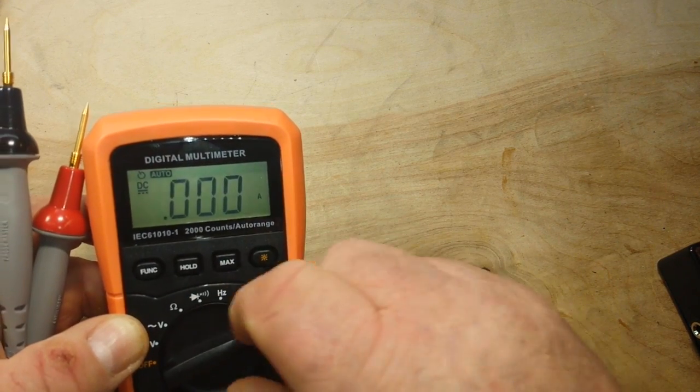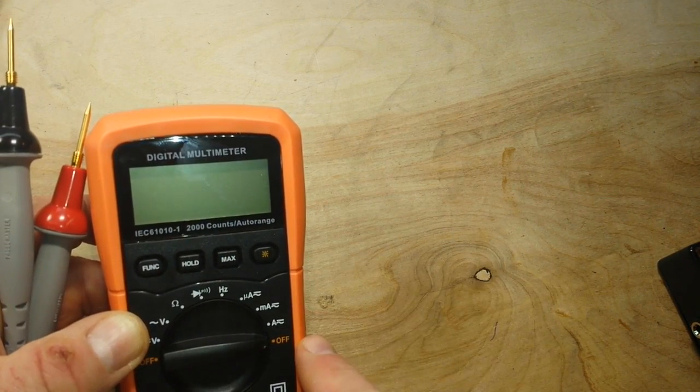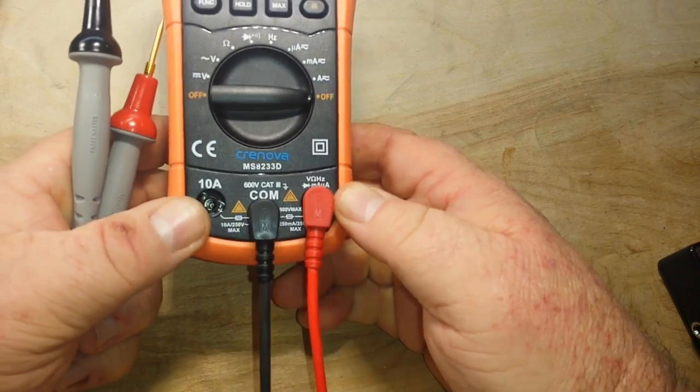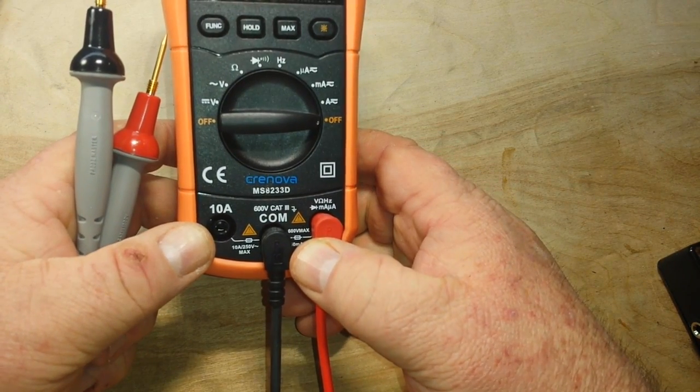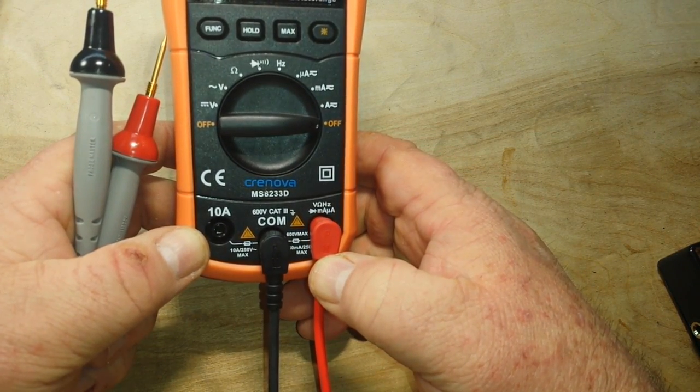AC microamps. Oh, they're both AC and DC. Okay, so microamps, milliamps, amps, and it has an off at either side. It claims to be 600 volt CAT 3. Okay, we'll see.